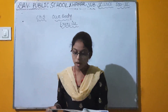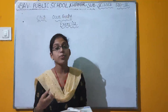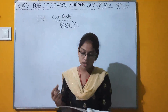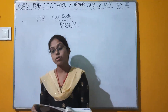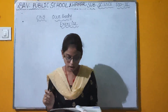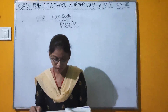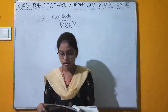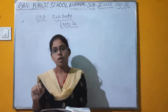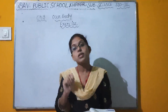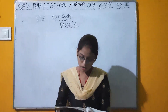The system that helps to digest our food is the digestive system. Any message to the brain is given by nerves. The part of the body that gives shape and support is bones. Blood is carried to every part of the body by blood vessels.